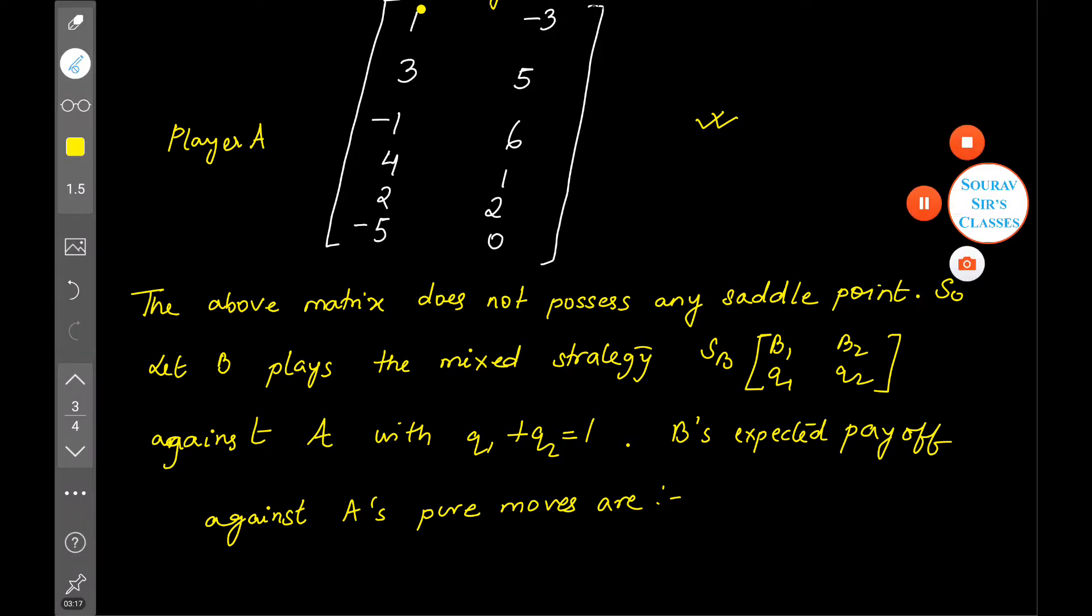Using the payoff matrix given to us, I'm making two columns. One is pure move, and given the move, what will be B's expected payoff. I'm writing this as E(q).